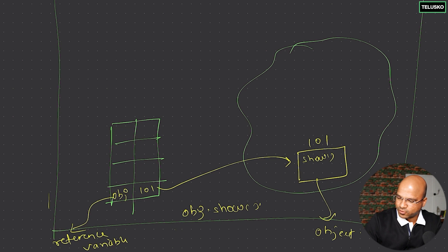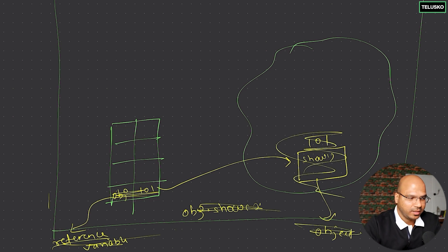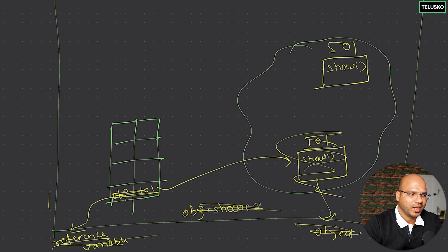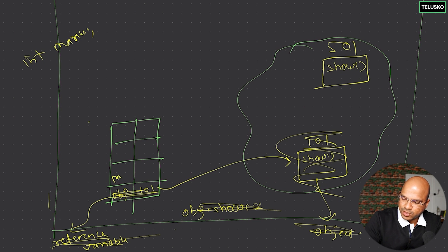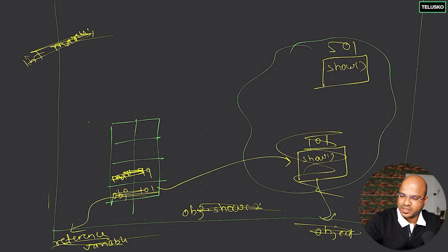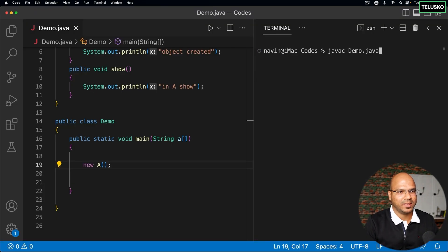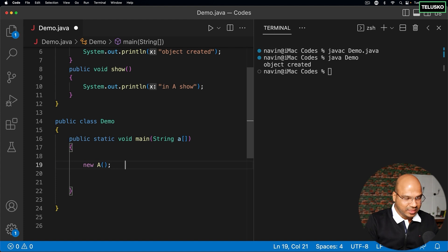When you write just 'new A', that alone is object creation. The moment you do that, an object is created in heap memory — let's say at address 501 — with the show method. The only thing is we are not creating any variable in the stack. Just as 'int marks' creates a stack variable, here we are only creating an object in heap with nothing in the stack. If you compile and run, it prints 'object created'.